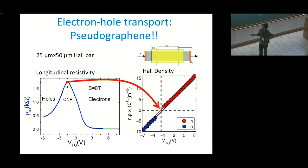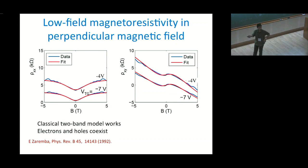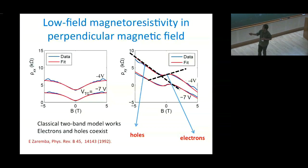We can confirm this coexistence from low-field magnetoresistance measurements as well. In a system with both electrons and holes, taking the classical low-field magnetoresistance in the longitudinal measurement, you see a parabolic feature, which is called the Zaremba model. In the Hall measurement, you don't see a linear feature — instead you see an S-like feature, where the positive slope corresponds to electrons and the negative slope corresponds to holes. This confirms that electron and hole coexist in our system.